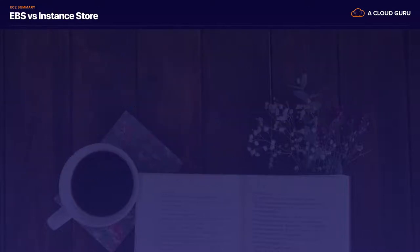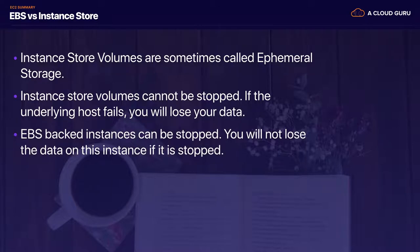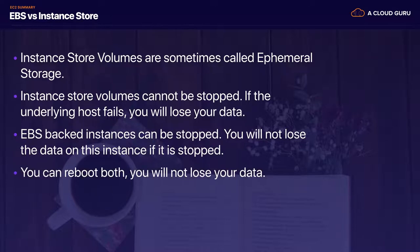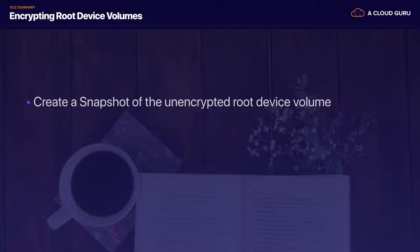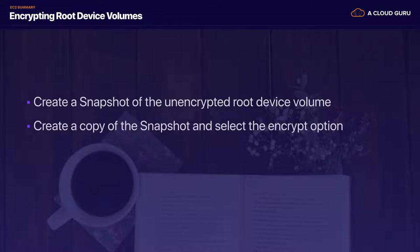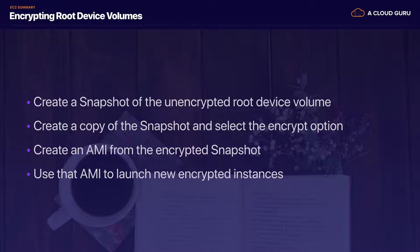Instance store volumes are sometimes referred to as ephemeral storage. Instance store volumes cannot be stopped — if the underlying host or hypervisor fails, you'll lose your data. EBS-backed instances can be stopped without losing data. You can reboot both without losing data. By default, both root volumes are deleted on termination; however, with EBS volumes you can tell AWS to keep the root device volume. Don't forget you can also encrypt root volumes using software like BitLocker.